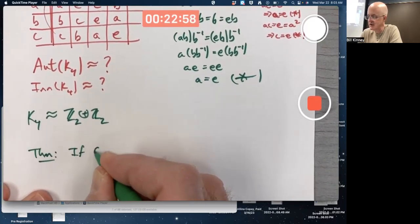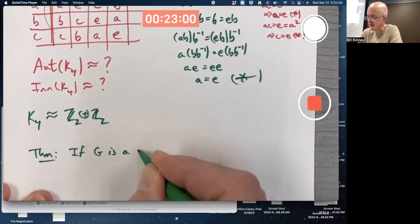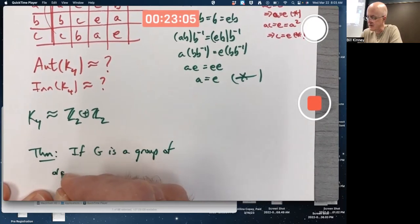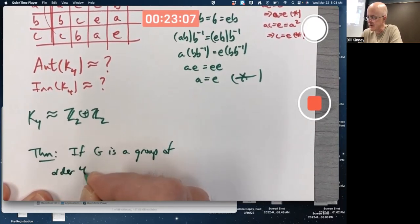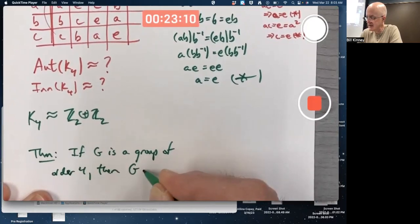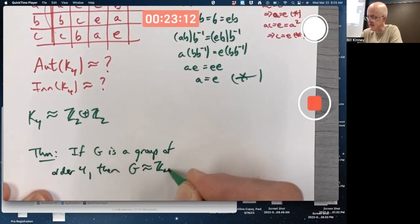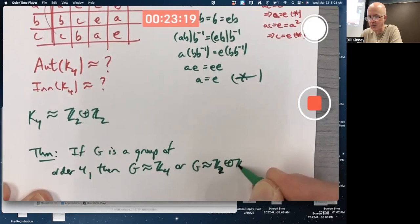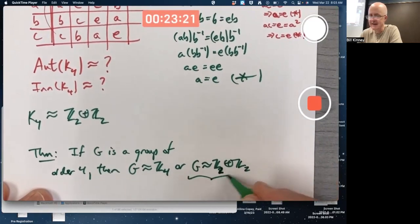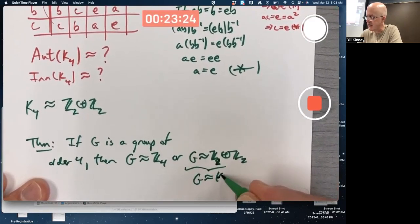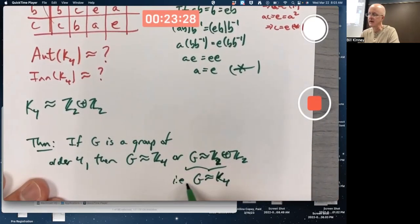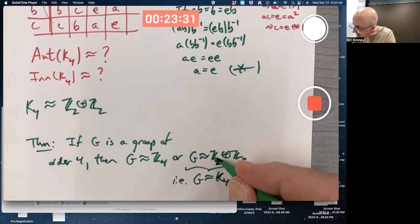If G is a group of order 4, then G is either isomorphic to Z4 - it's either cyclic - or G is isomorphic to the external direct product of Z2 with itself, which means G is isomorphic to K4, the Klein 4 group.